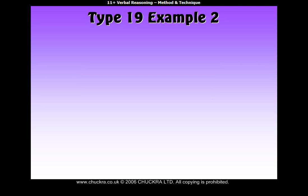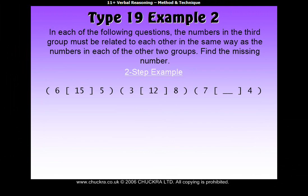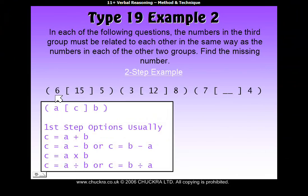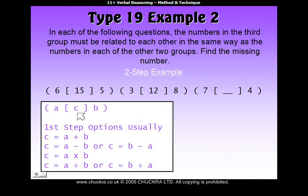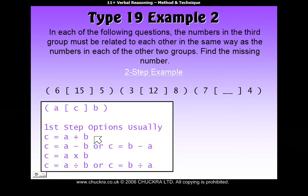Let's have a look at another Type 19 example. The instructions are the same — find the missing number in the third group. You may remember from the previous example that each group has a number in the middle called C, and numbers on the outside called A and B. Our job is to find a rule to find C using A and B. What you might find is that none of the simple one-step methods work. The reason is because sometimes in Type 19 questions, there are two steps before you get your answer.